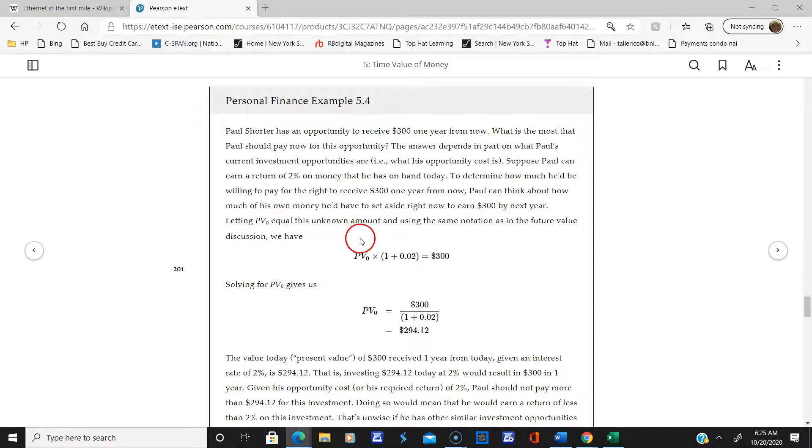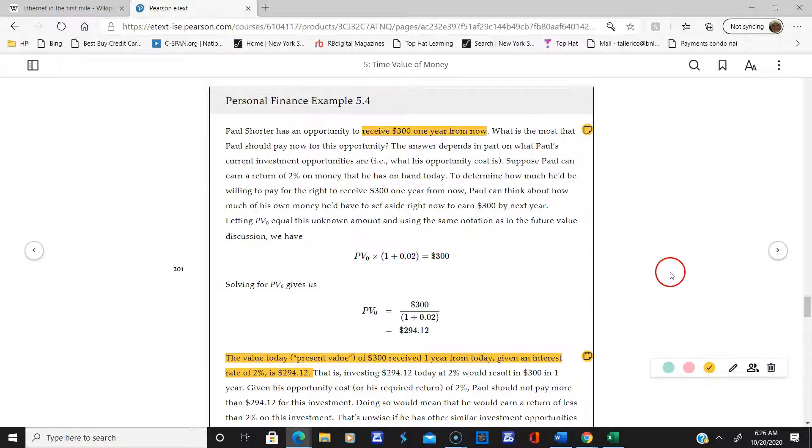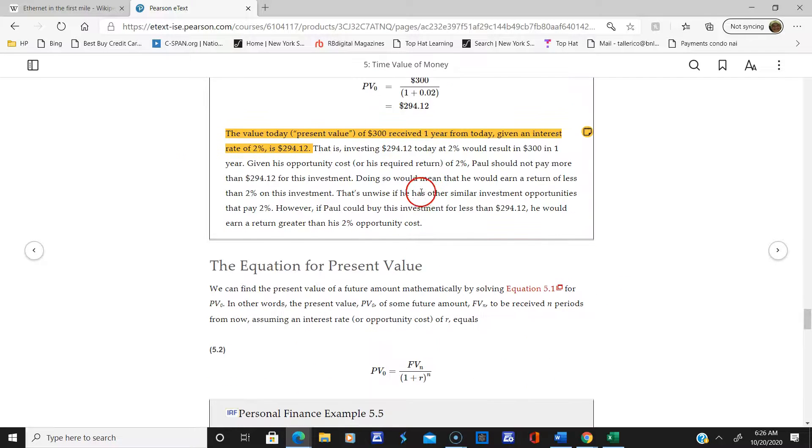If Paul is going to receive $300 one year from now, what is the most he should pay for this opportunity? They're telling Paul invest money today, and in a year, we'll give you $300. When you solve for present value, Paul should pay $294.12 to receive $300 a year from now. The interest rate is 2%.